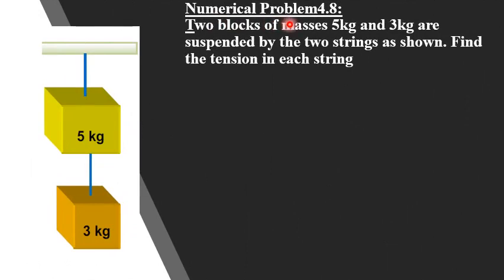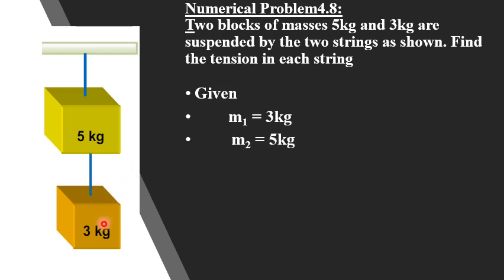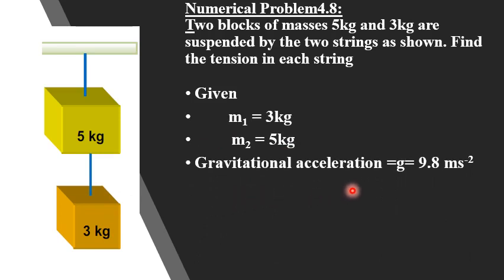Numerical Problem 4.8: Two blocks of masses 5 kg and 3 kg are suspended by two strings, as you can see in this figure. Find the tension in each string. Given: M1 = 3 kg, M2 = 5 kg, and g = 9.8 m/s². We have to find the tension T1 in the first string and T2 in the second string.